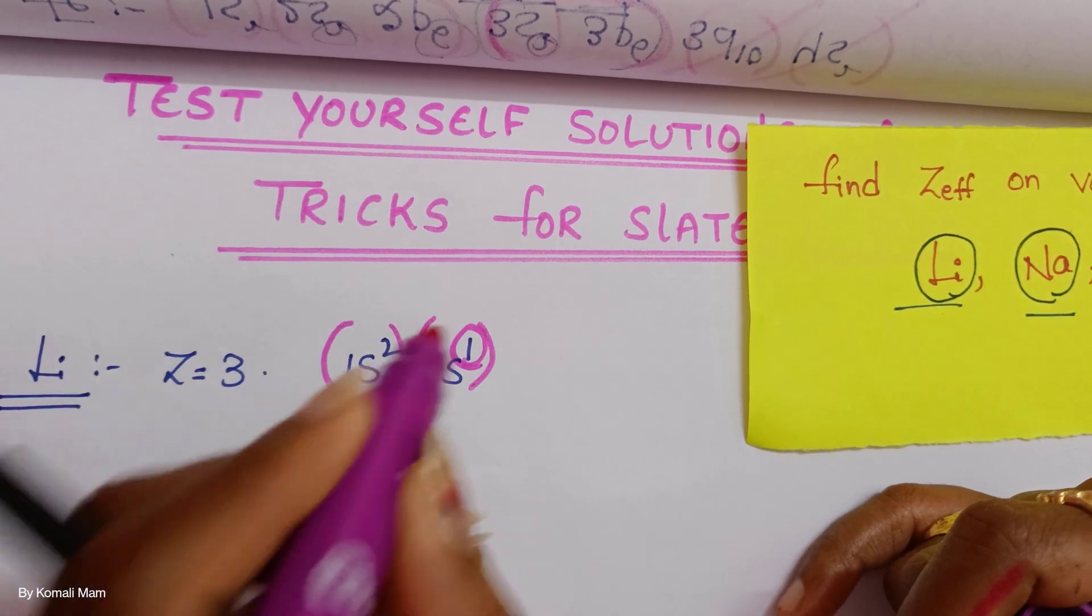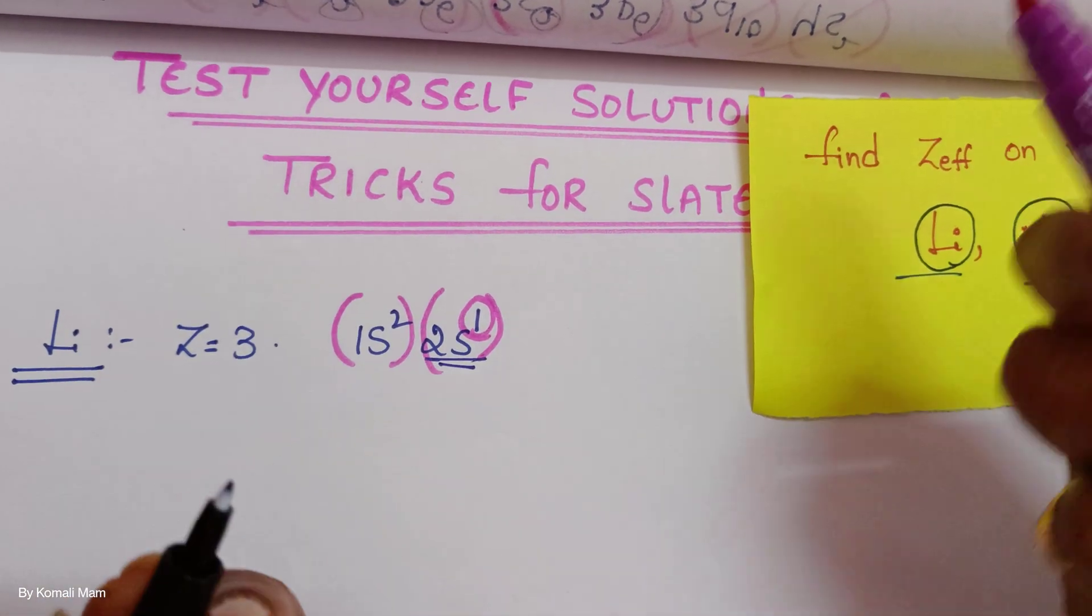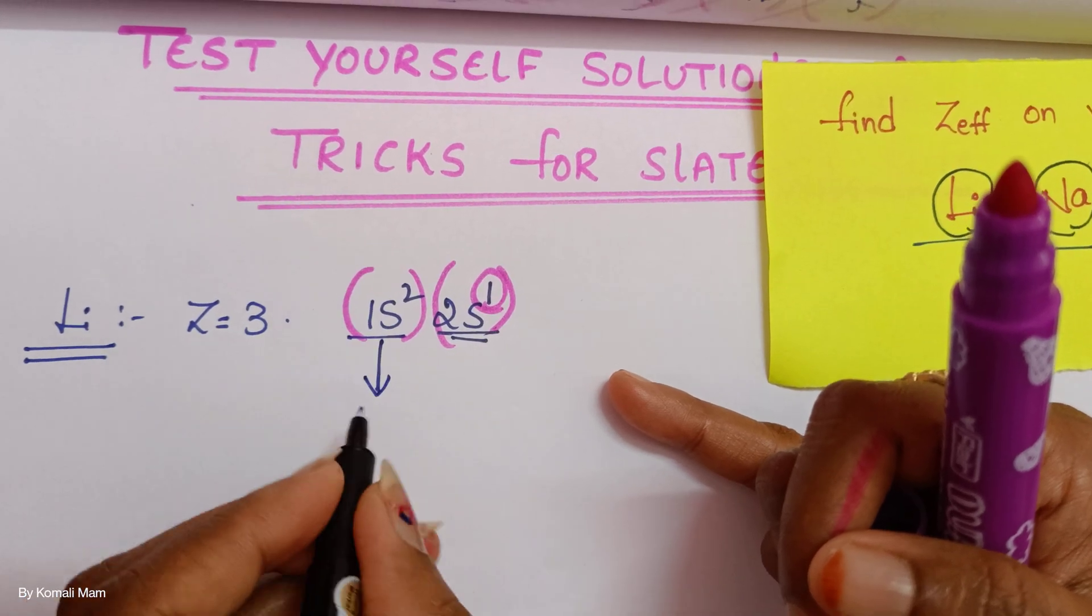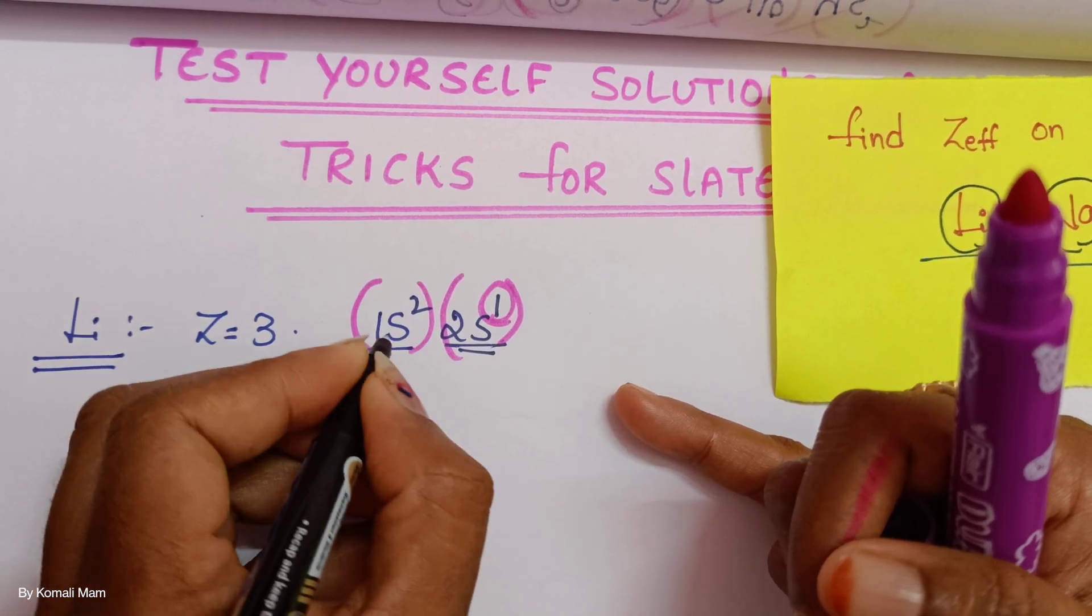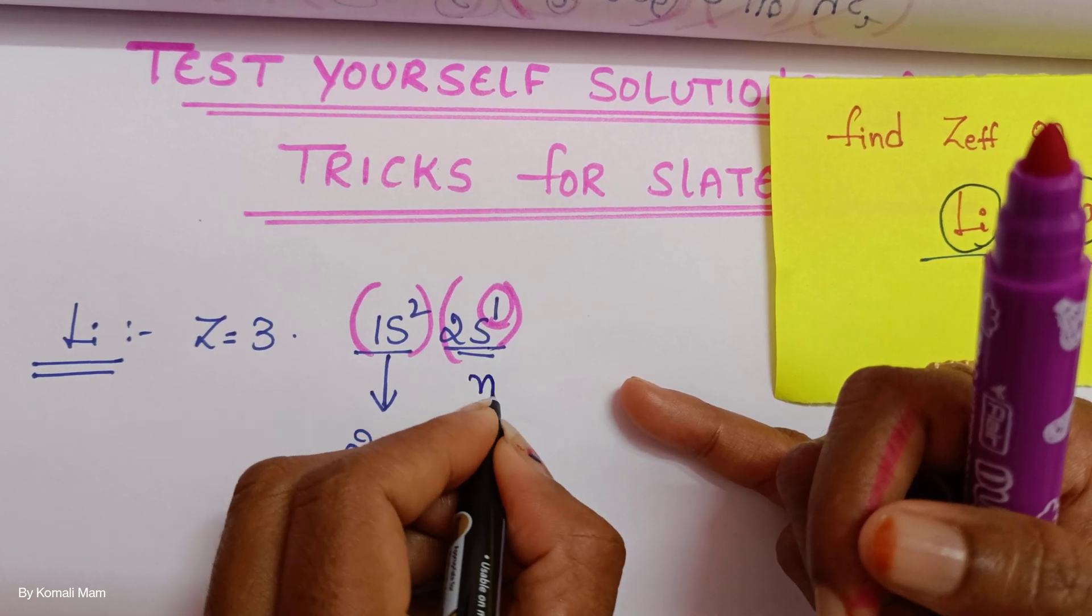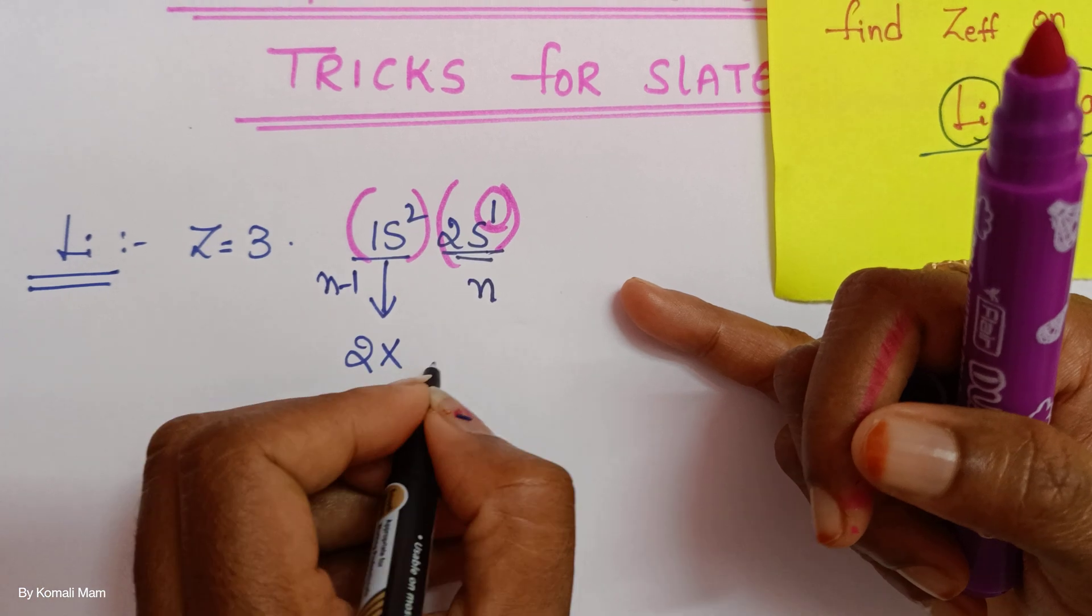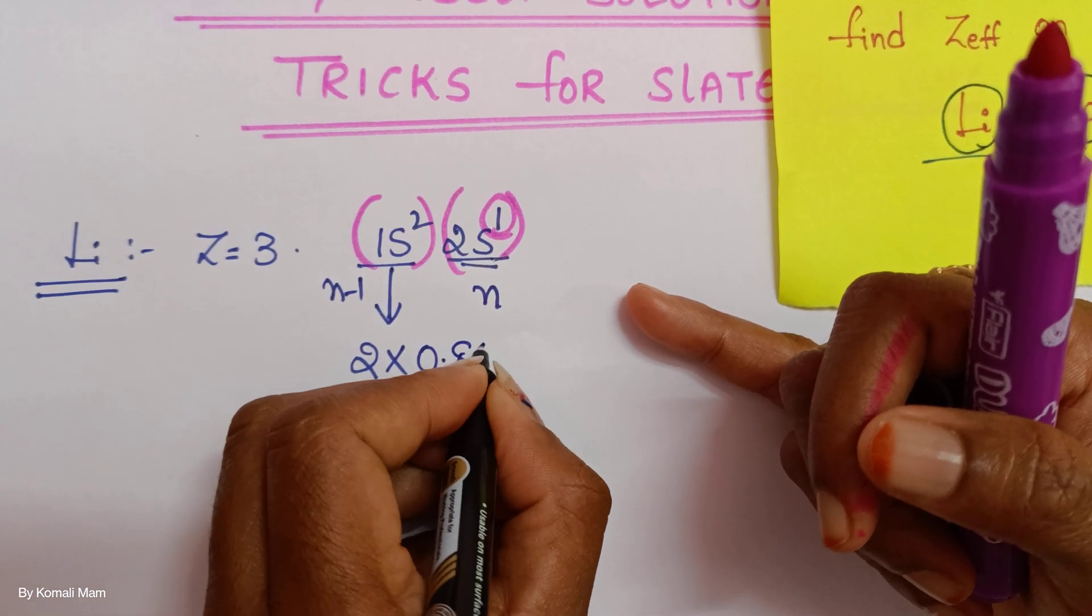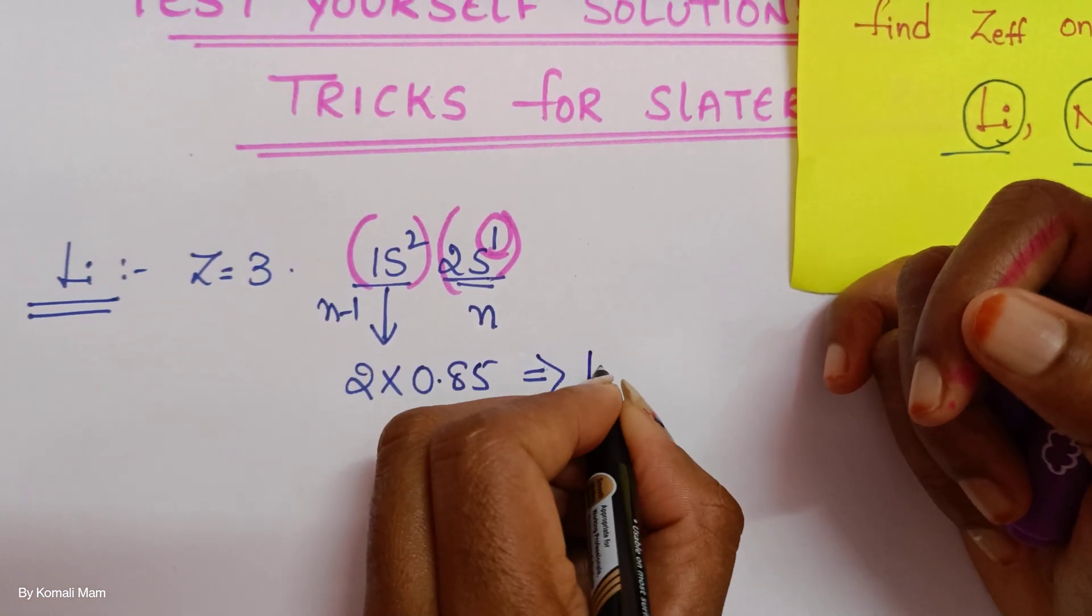You are calculating for this electron. So there is no other electrons. Now how many electrons are left here? 2 electrons and each electron contribution for this is N minus 1. So 2 into 0.85. How much is it? 1.7.